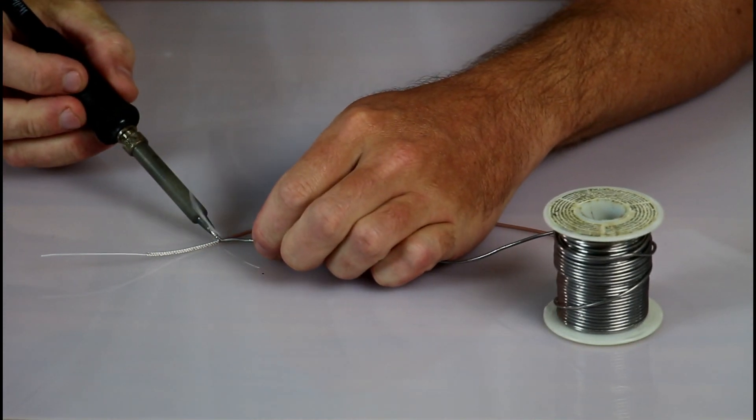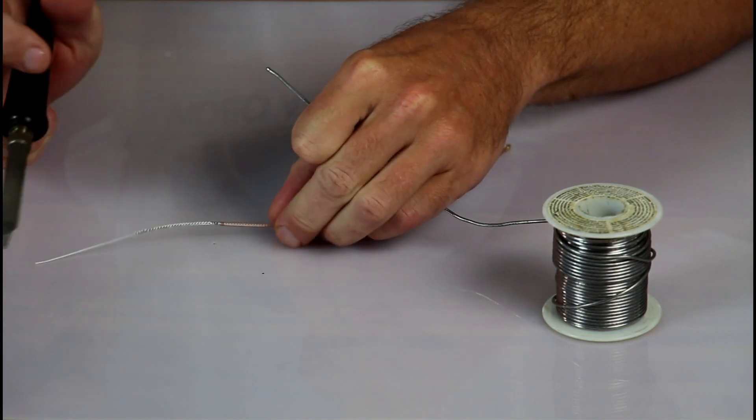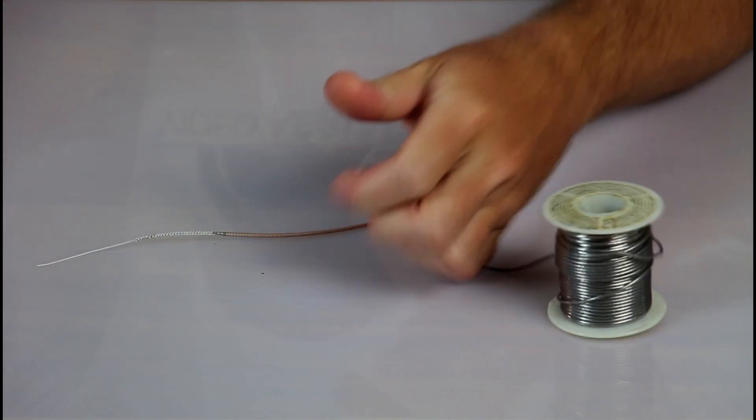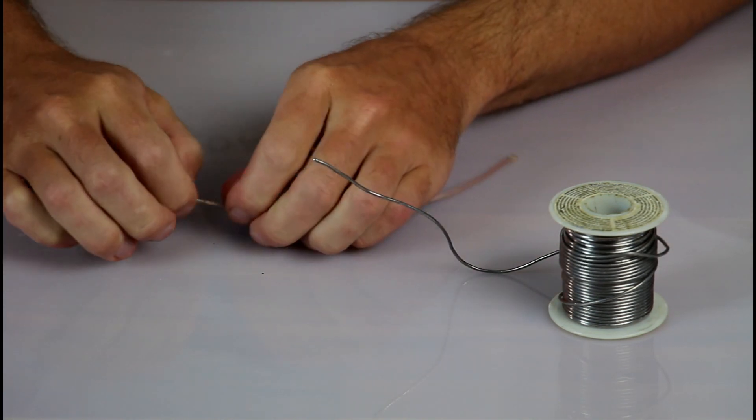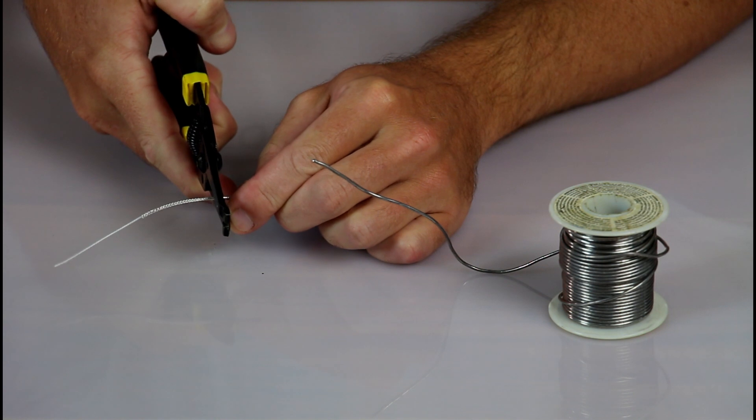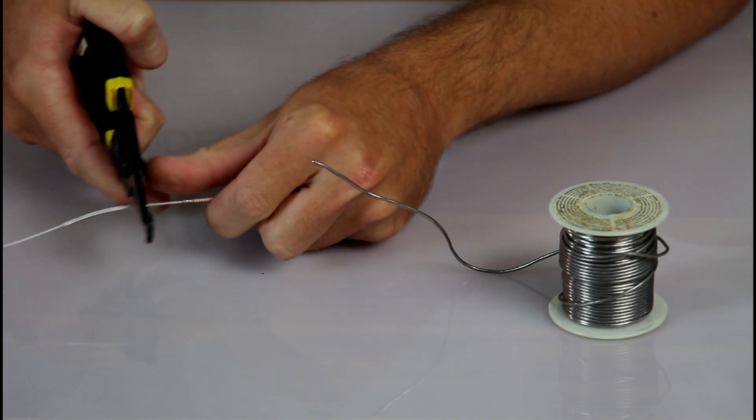Approximately one and a half to two inches at each section makes this a lot easier. Then what you need to do is tin up a small section of cable and this will allow your wire strippers to bite in and separate it. Now to separate this I found that the 22 gauge wire setting on my wire strippers was perfect. Just pop it in place, wiggle it, and then pull and it slides right off.